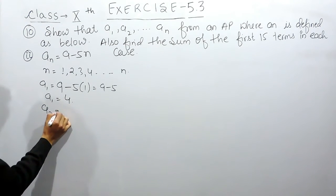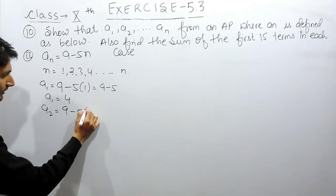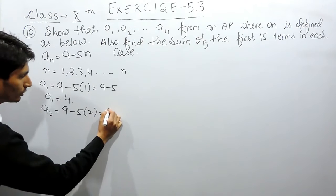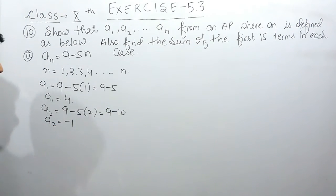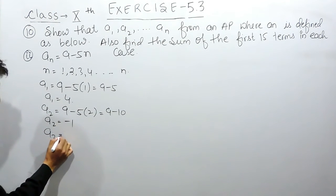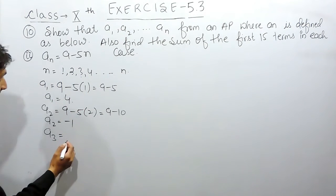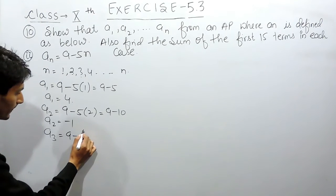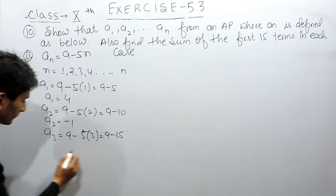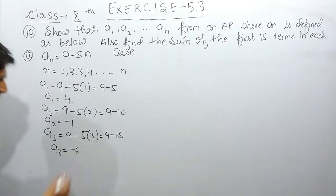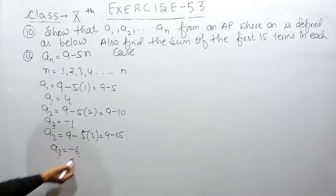Similarly, if I consider n as 2, a2 = 9 minus 5 into 2, which equals 9 minus 10, so a2 equals minus 1. If I consider n as 3, a3 = 9 minus 5 into 3, which equals 9 minus 15, so a3 equals minus 6. So the first term is 4, the second term is minus 1, and the third term is minus 6.